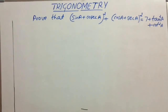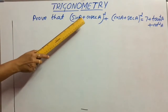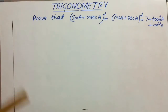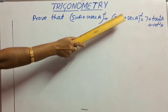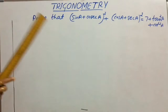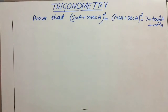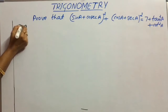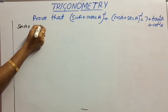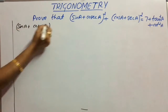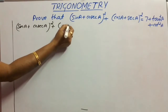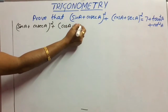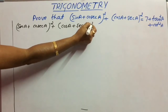Let's move on to the next question. Prove that (sin A + cosec A)² + (cos A + sec A)² = 7 + tan²A + cot²A. Consider the LHS: (sin A + cosec A)² + (cos A + sec A)².